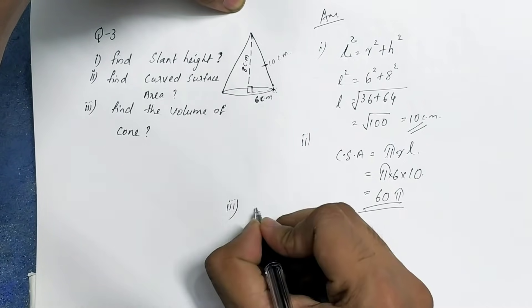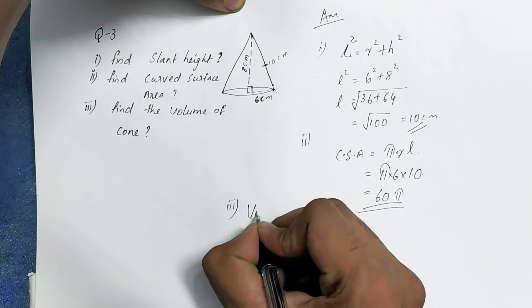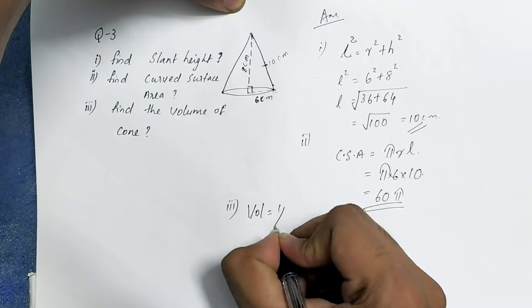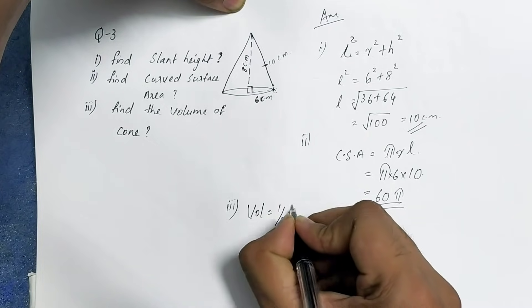The volume of the cone is one-third πr²h.